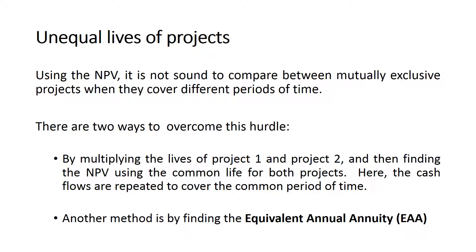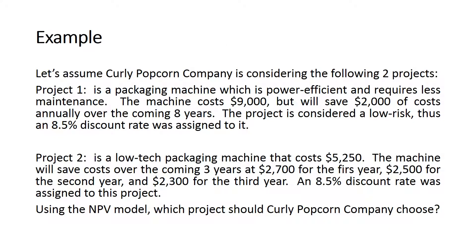Another scenario when using the net present value is having projects with unequal lives. It is not sound to compare mutually exclusive projects that cover different periods of time. There are two ways to overcome this: one is to multiply the lives of both projects and find the NPV using a common life, repeating cash flows over that common period — though this method is not very accurate and can be very lengthy. The other method is finding the Equivalent Annual Annuity (EAA).